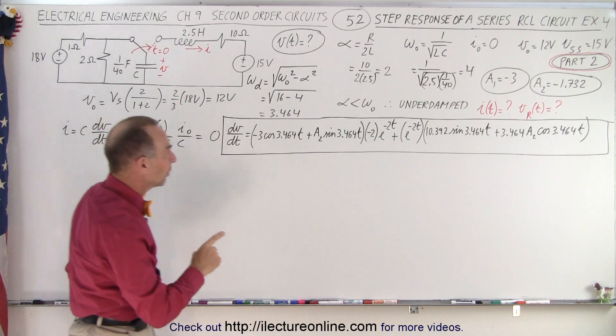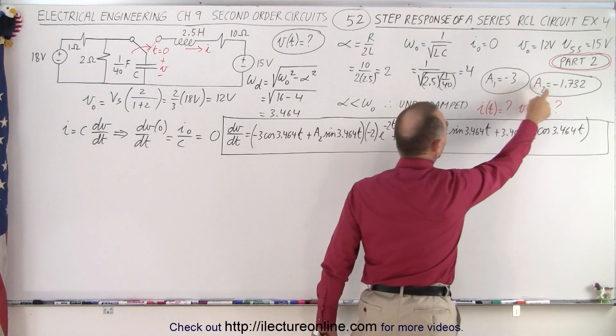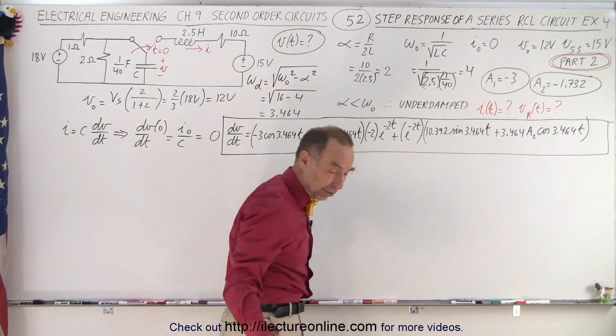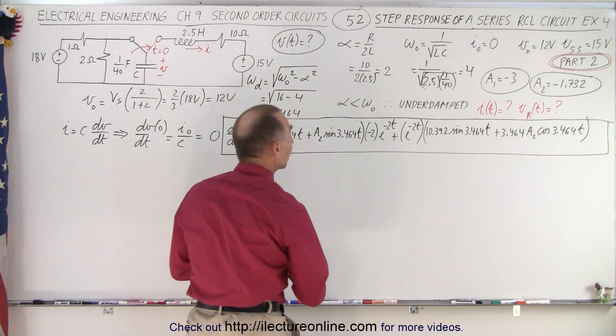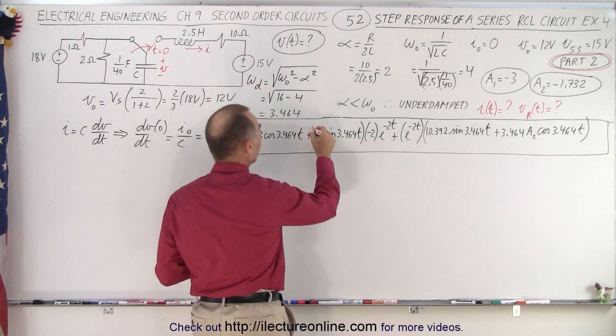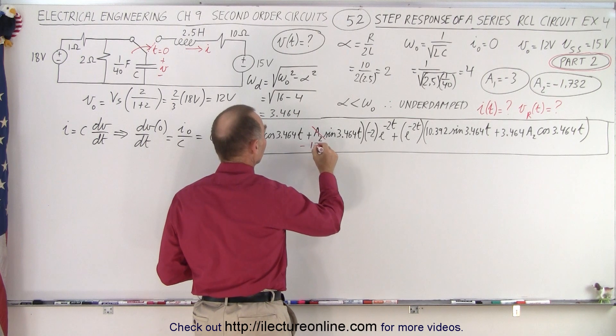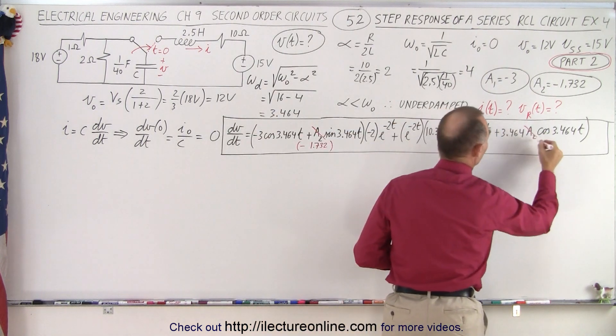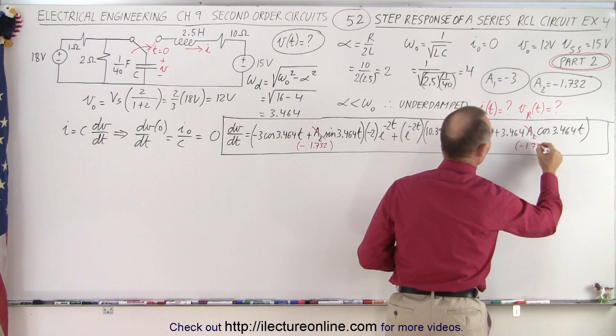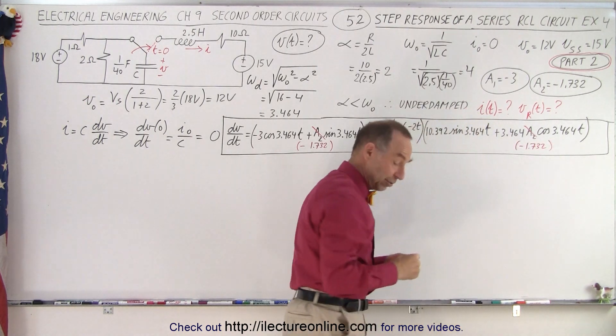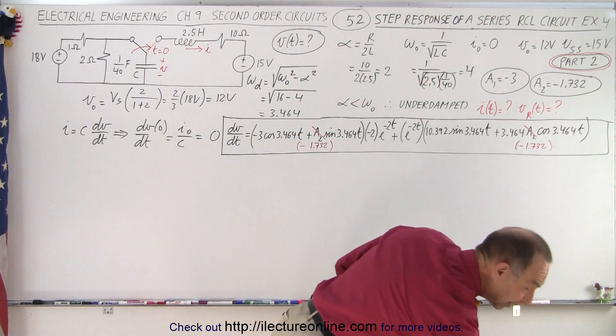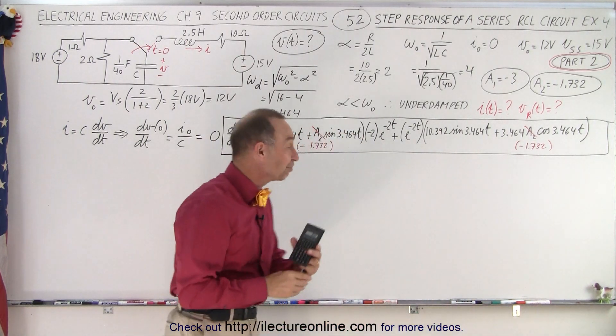Notice we have values for A1 and A2, and here we have not yet substituted the value we found for A2, so we need to do that. A2 becomes minus 1.732, and then over here, A2 also becomes minus 1.732. So now let's complete that equation and find the current, and I'll probably need my calculator for that.